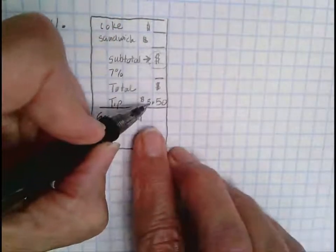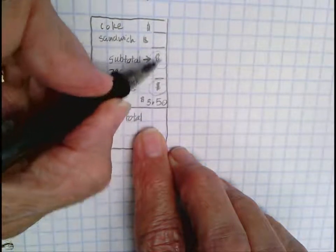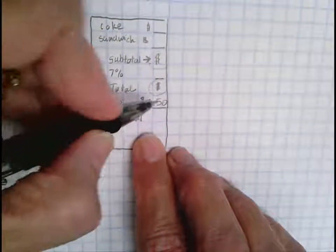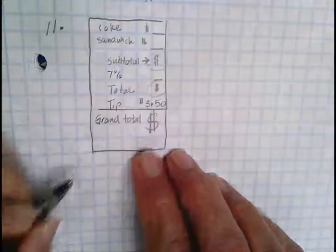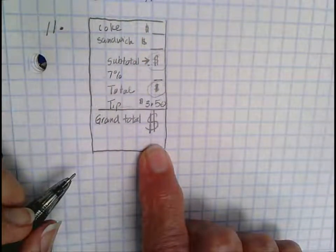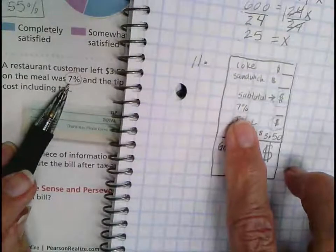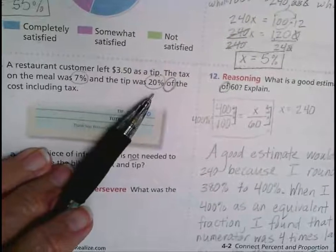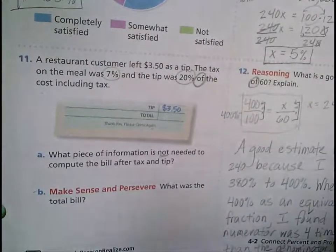So the grand total would go here. This would be the amount that you would add to this quantity because you've already added in the tax up here. You would add your tip in, and this is the amount of money that you would be paying. The grand total.